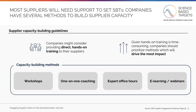As we covered in the previous module, most suppliers will need support to set their science-based targets. While the resources you provide suppliers are a helpful starting point, you should be ready to provide direct, hands-on training and support. Some examples of capacity building are workshops, one-on-one coaching, office hours, or e-learning for suppliers. Time and resource availability will dictate the extent of these programs. Internal or external sustainability experts can also be leveraged, and you may consider reaching out to industry peers to deliver collaborative training and pool resources.